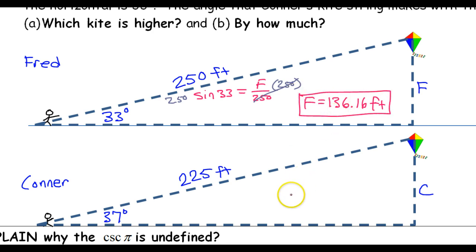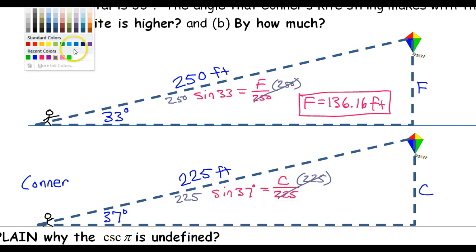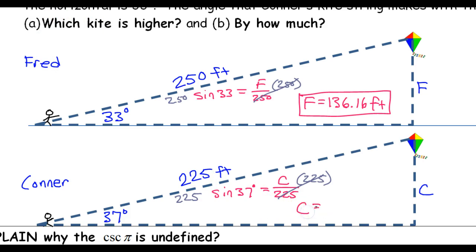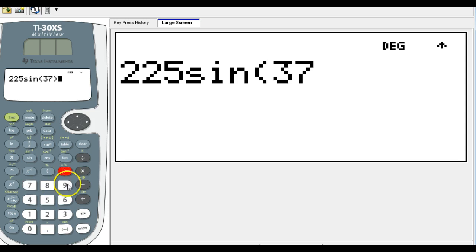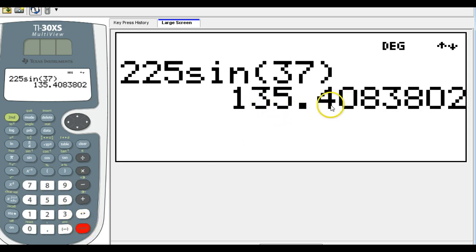Now let's do Connor. Same situation. Sine of 37 degrees is equal to opposite over hypotenuse. So that'll be C over 225. Again, to get C by itself, we will multiply by this 225. So these will cancel out and this will give us C, the height of Connor's kite. So 225 sine 37. So that's 135.41.